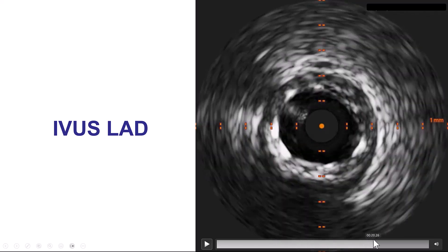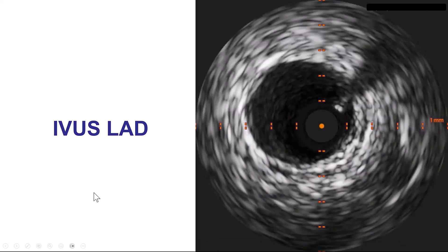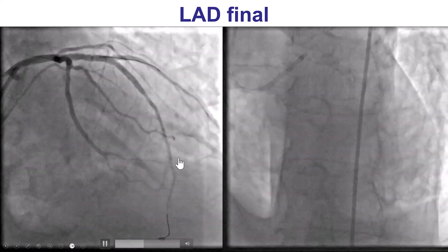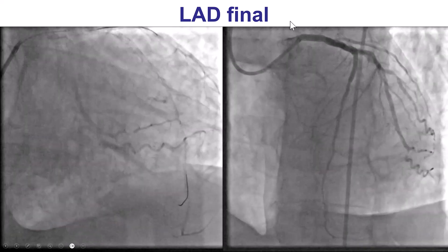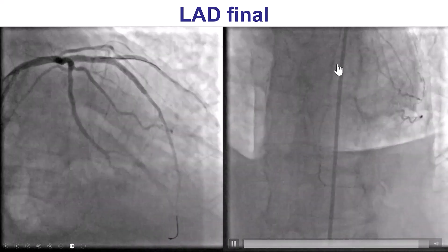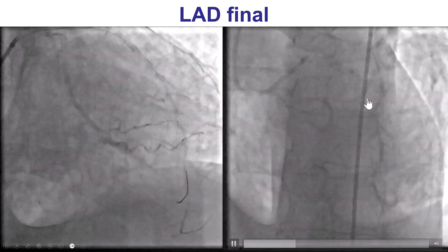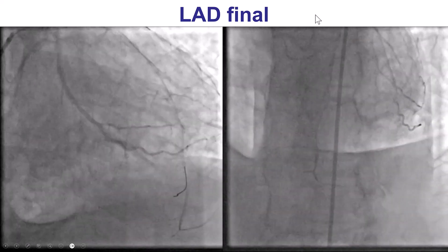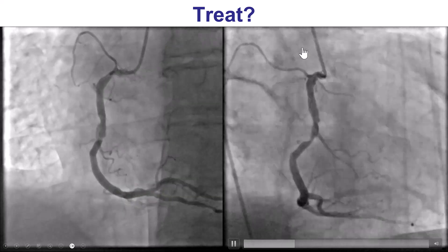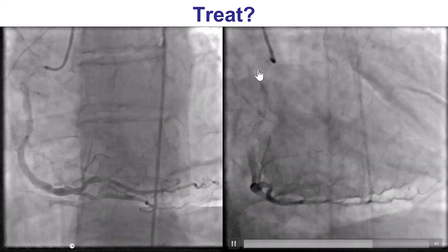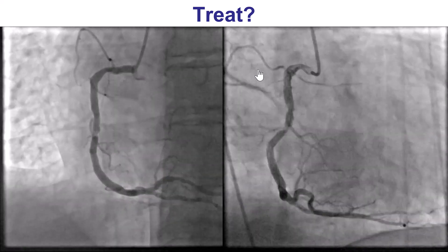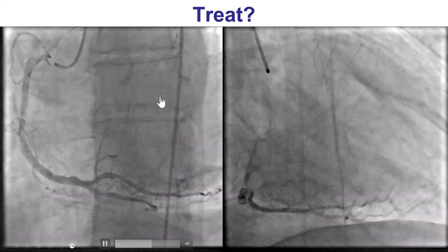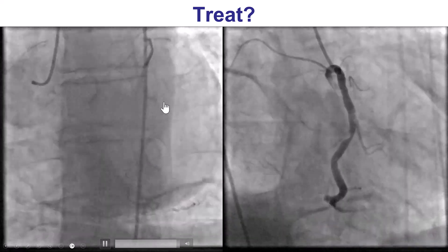We do have well-expanded stents in the mid-LAD all the way to the proximal LAD. This was the final result — very good TIMI flow in both the diagonal as well as the LAD, and the patient remained stable throughout the procedure. However, he continued to have chest discomfort. Although there was some improvement, he continued to have significant chest discomfort, and the question was about treating the right coronary artery.